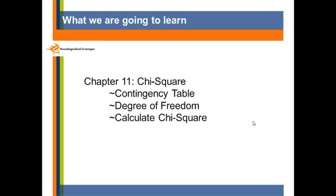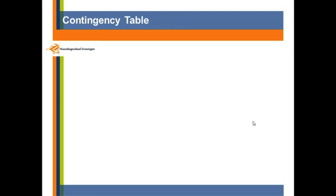First, what is the contingency table? How to get the degree of freedom for the chi-square? And then how to calculate your chi-square, and what does this mean? Let's look at the contingency table. We also call this a cross-break table.